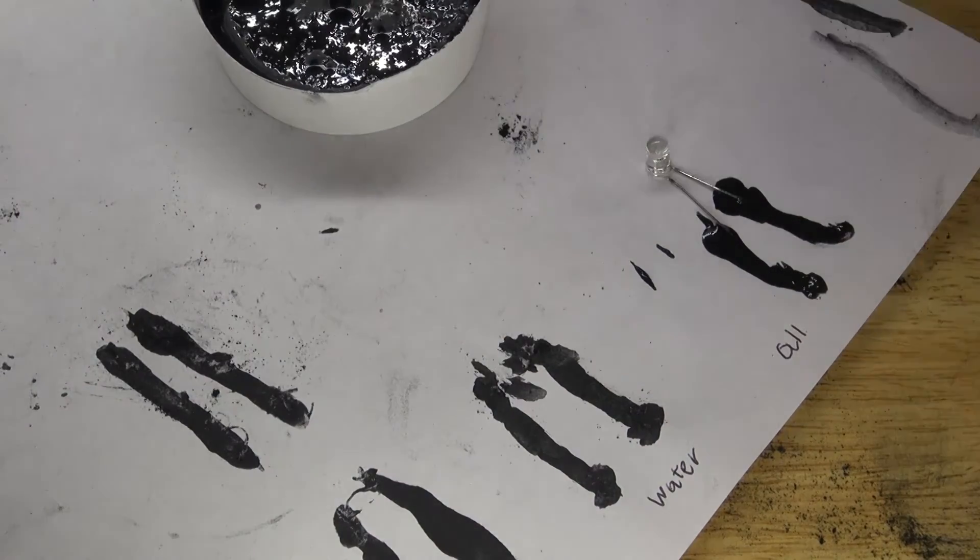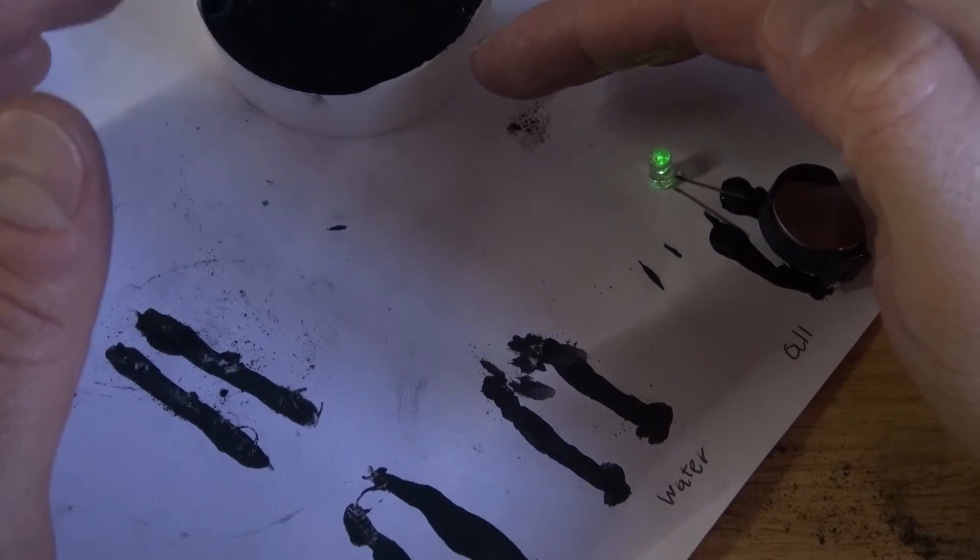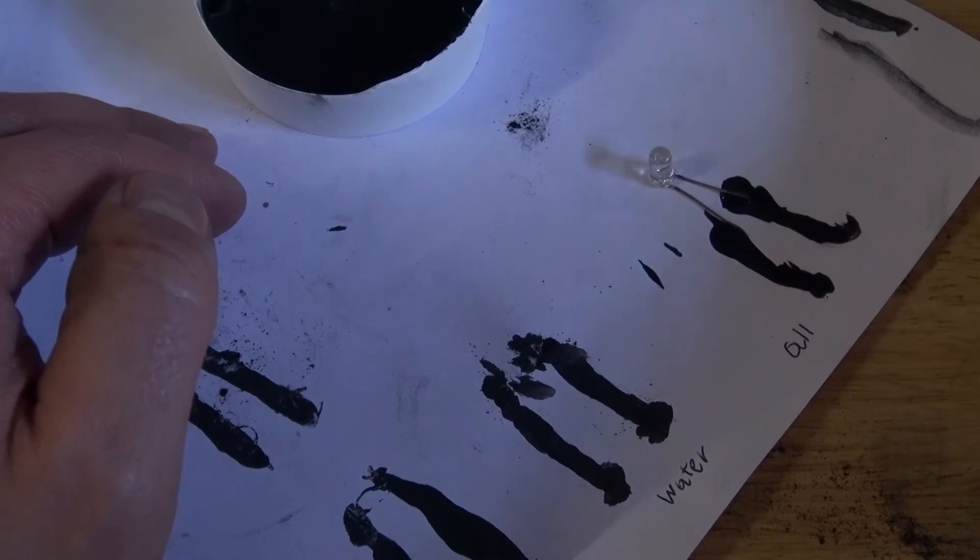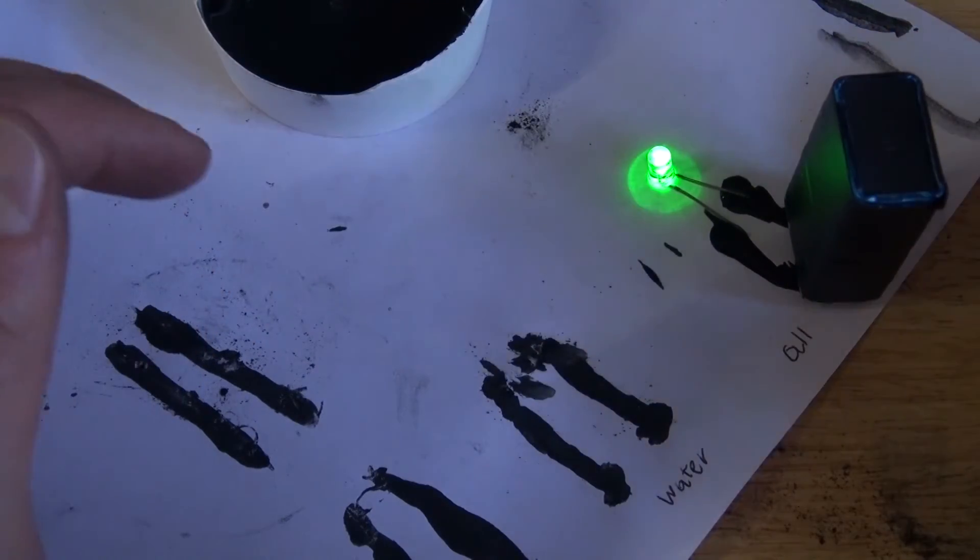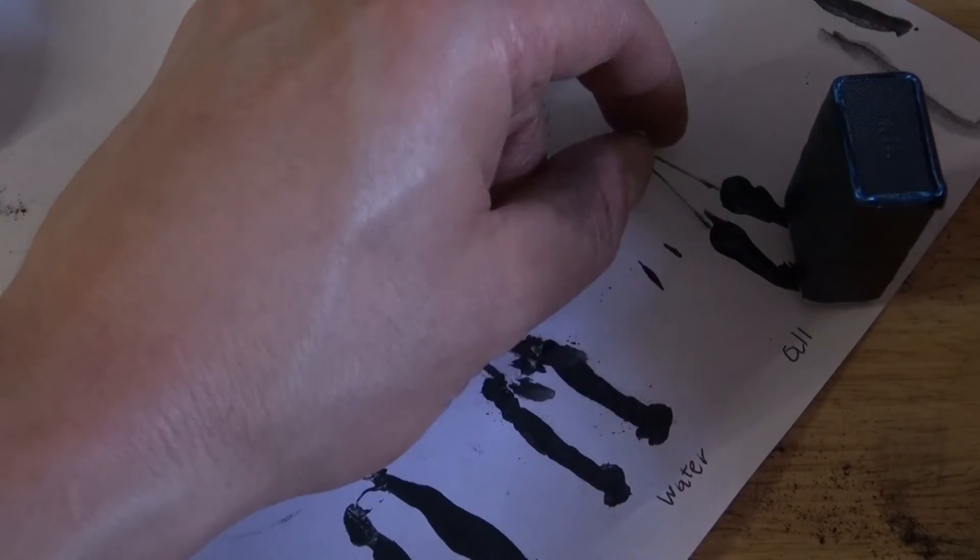Now, let's see how conductive it is. How interesting. Using three volts, the LED is a little bit brighter. Okay, so this is very good. Take the 9 volt battery, and as you can see, it's extremely bright. Wow, this is very good. This method is extremely conductive.